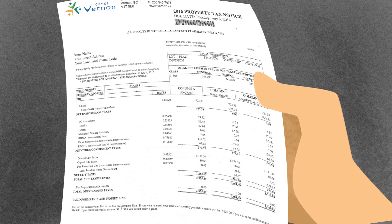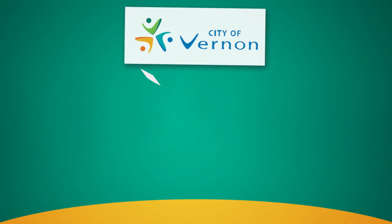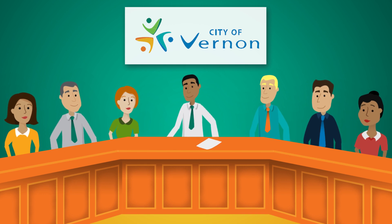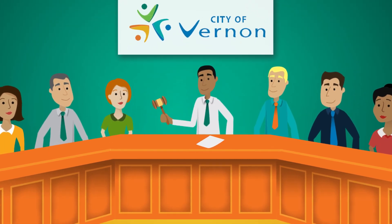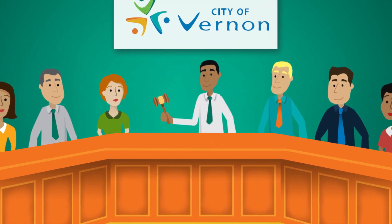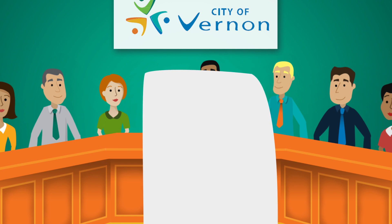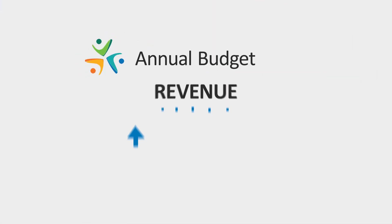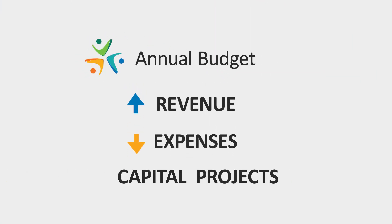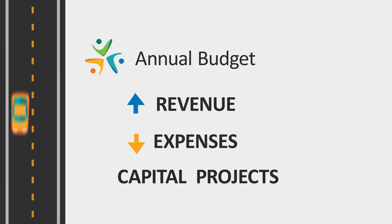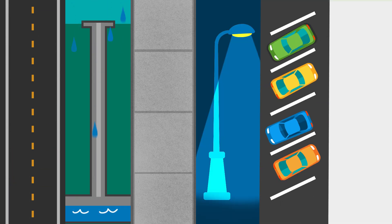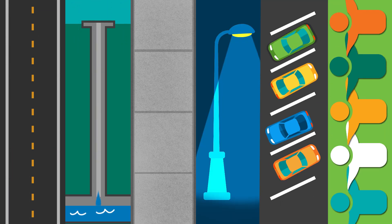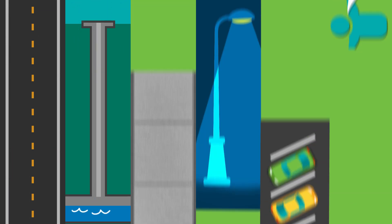First, let's talk about the tax rates themselves. The City of Vernon budget is approved by City Council, which will determine the level of services that will be provided by the City each year. The City budget sets the levels for all City revenues, expenses, and capital projects, such as roads, sewer and storm, sidewalks, streetlights, parkade, community buildings, and more.